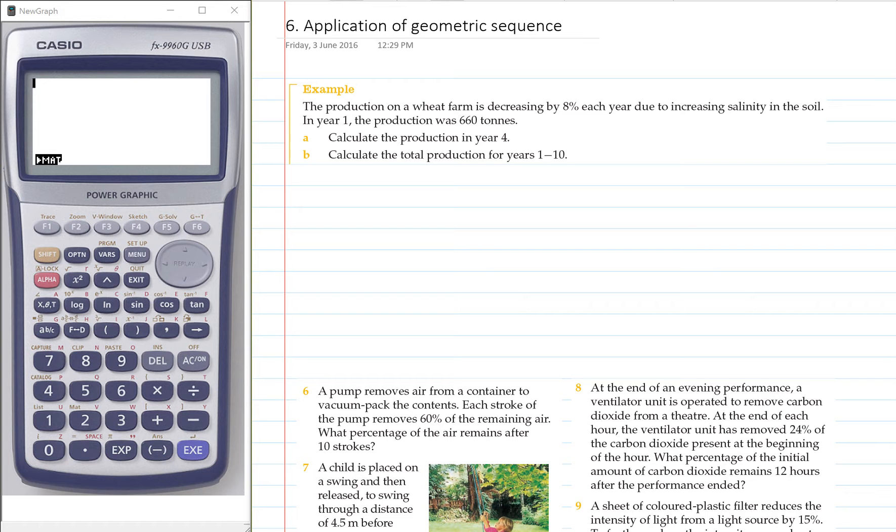Just reading through it, the production on a wheat farm is decreasing by 8% each year. So that means that our r value would be 0.92 because there will be 0.08 losing each year. In year 1 the production was 660 tonnes, so that means that our first term is 660.